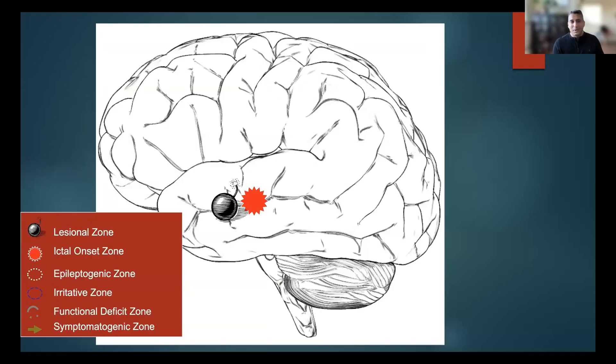Now thankfully, 80 years later, we have a lot better understanding of how epilepsy can occur in patients' brains, in patients with lesions. What we understand, as I mentioned before, is we have a lesional zone and the ictal onset zone.